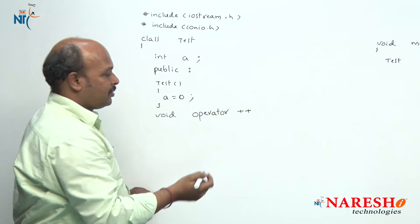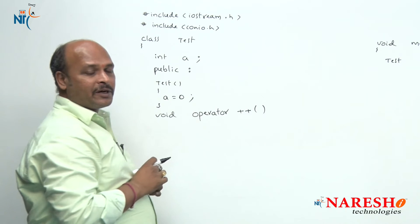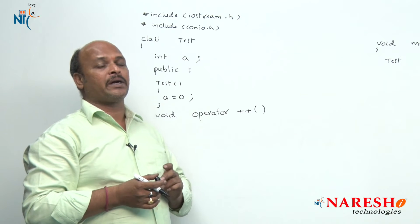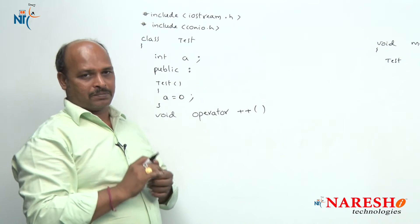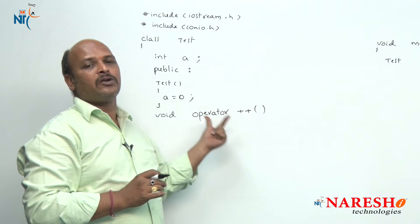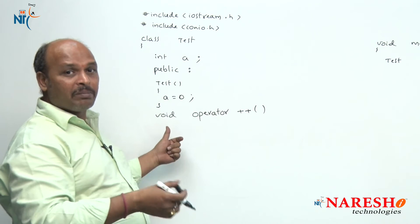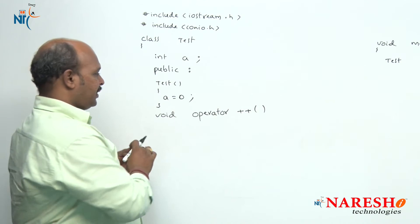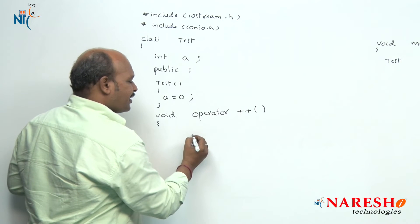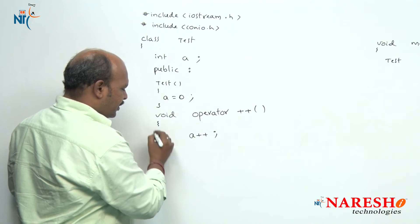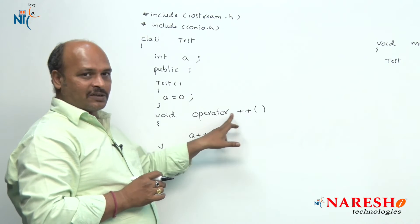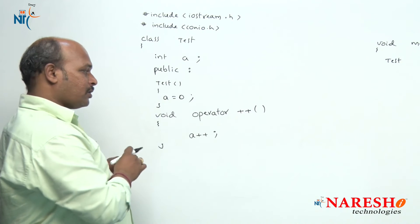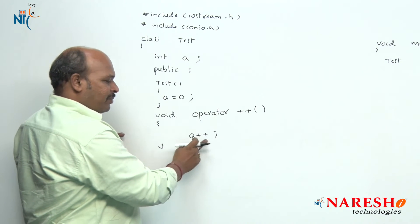When a unary operator is overloaded with a member function, there is no need of an explicit object, that is why I use empty brackets. Inside the function body I write a plus plus. It is nothing but a function, but in place of a function name we are using the operator symbol — this is called operator overloading.